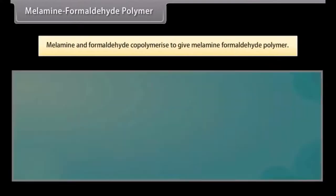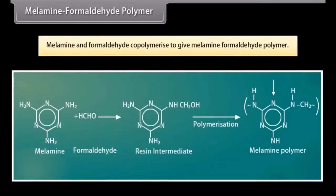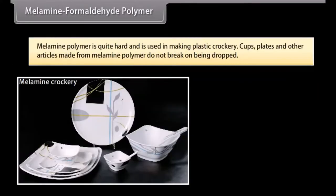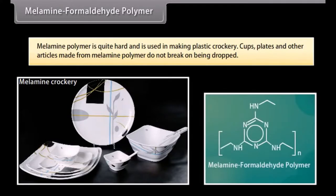Melamine and formaldehyde co-polymerize to give melamine formaldehyde polymer. Melamine polymer is quite hard and is used in making plastic crockery, cups, and plates. The articles made from melamine polymer do not break on being dropped.